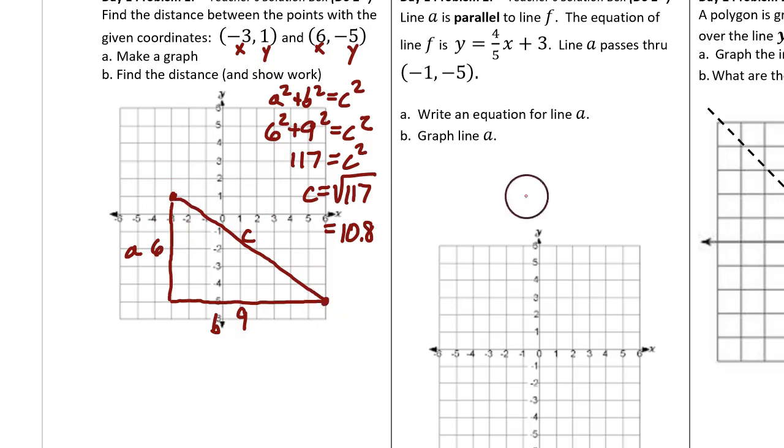Day 1, problem 2. Line A is parallel to F. That means we can find the slope of line A. It's the same as the slope of F, which is 4 fifths. We're also told line A passes through this ordered pair. We can call this number x1 and this number y1.